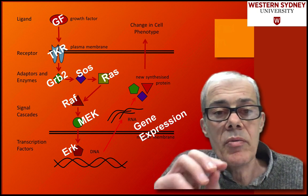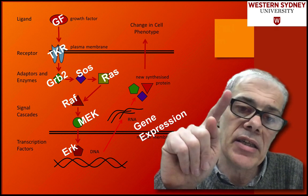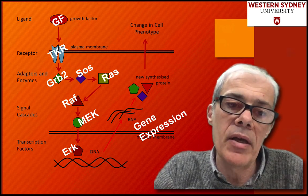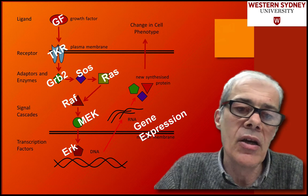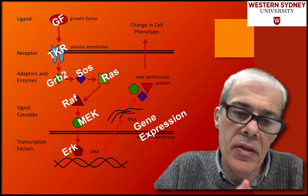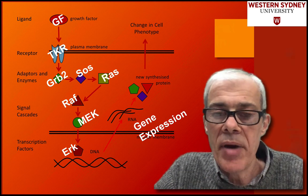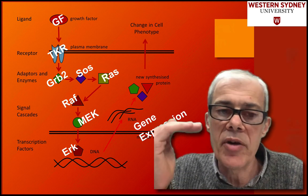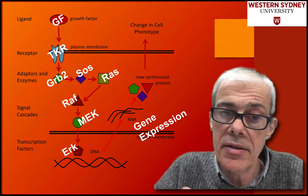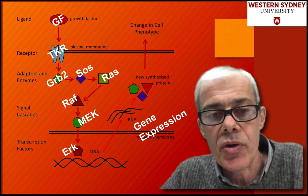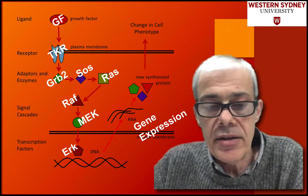Even though complicated cell signaling maps exist, here is a linear signaling pathway — the simplest pathway we can get from a growth factor to gene expression, and it involves RAS. We know RAS is an important oncogene, and the idea is that if we understand normal cell signaling, we can understand cancer cell signaling.